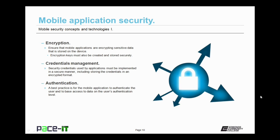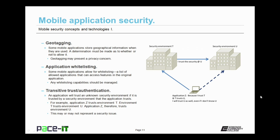Whenever possible, a best practice is for the mobile application to authenticate the user and to base access to data on the user's authentication level. A determination needs to be made on geotagging. Some mobile applications store geographical information when they are used, and a determination must be made as to whether or not to allow it, as geotagging may present a privacy concern. Some mobile applications allow for whitelisting — a list of allowed applications that can access features in the original application. This whitelisting capability should be managed, and security experts need to make sure they know what applications have access to other applications.